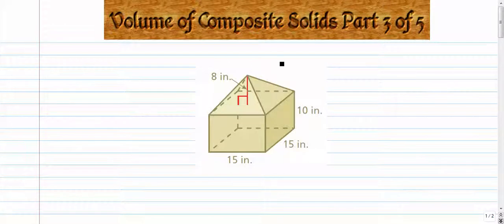Alright, part three of our Volume of Composite Solids series. In the first two parts of this series of five, we looked at two examples of composite solids. Again, composite solids are basically combinations of solids.